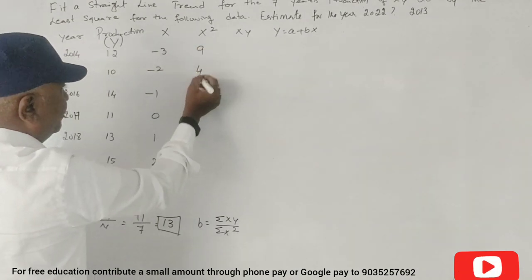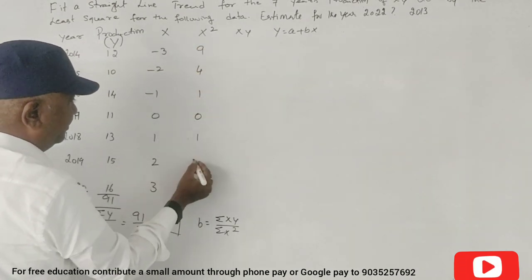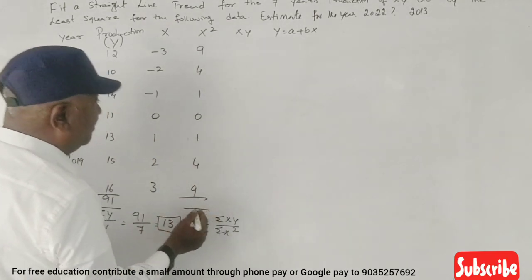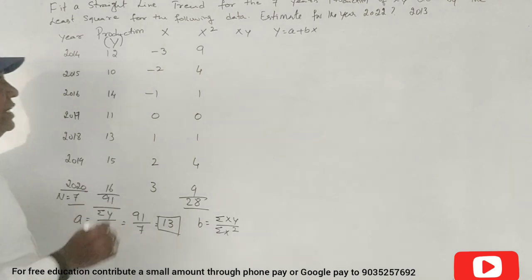Now the square values: 9, 4, 1, 0, 1, 4, 9. Correct? X squared total is 28.